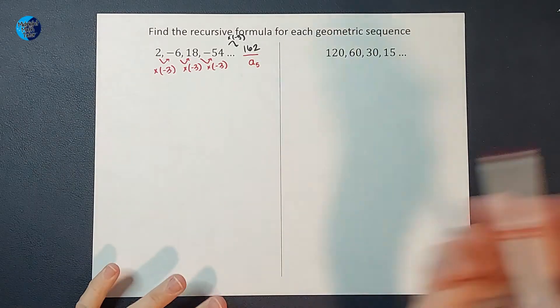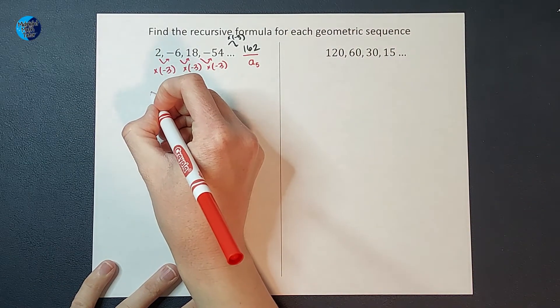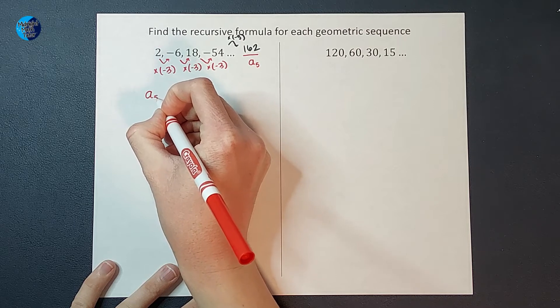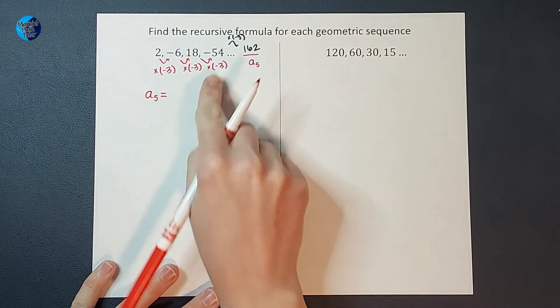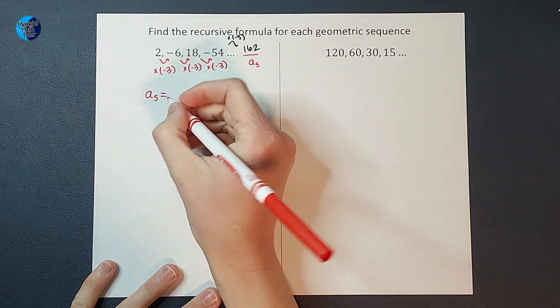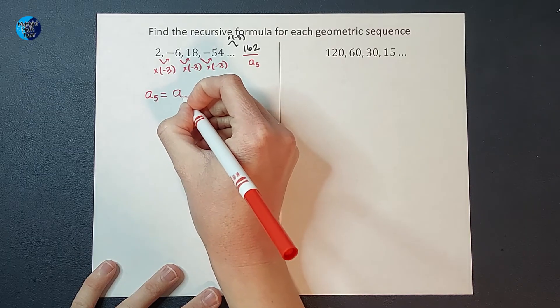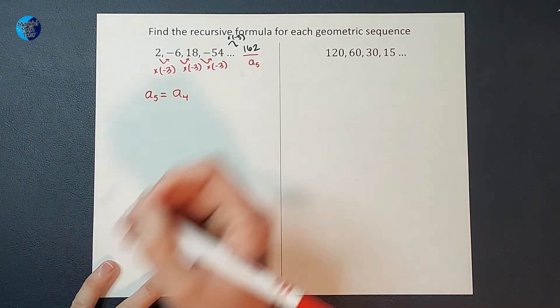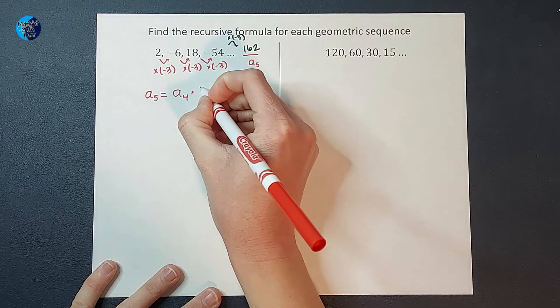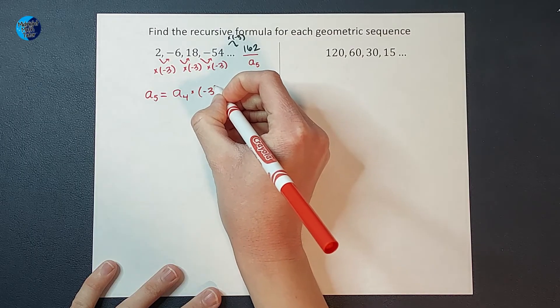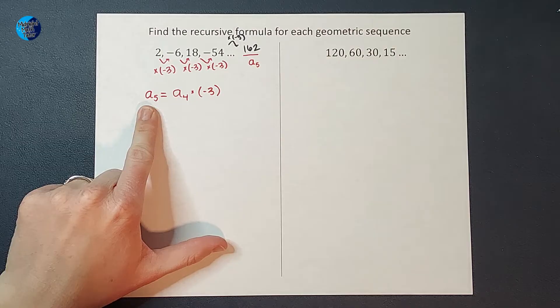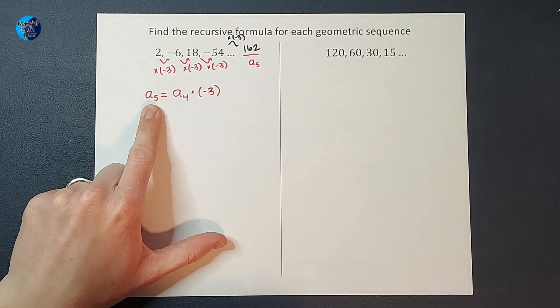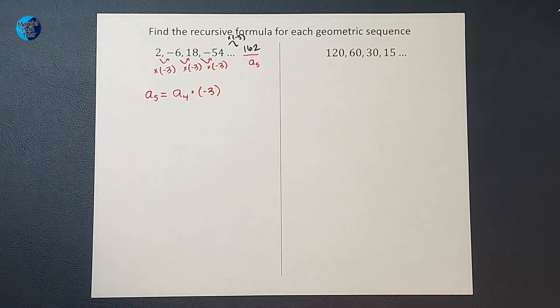But how do I say that in math language? Well, if I write out what I just did, I say to find A sub 5, I took the one before it, which in math terms we would call A sub 4. And what did I do? I multiplied by negative 3. Beautiful, right? But this is only a formula for if I want to find A sub 5. What if I want to find A sub 10?